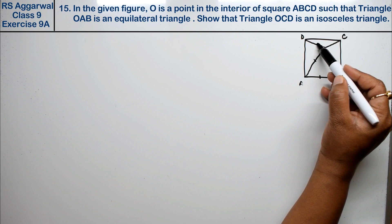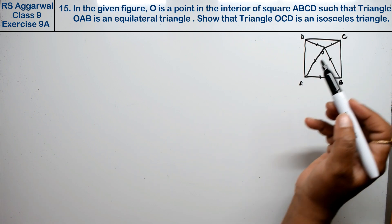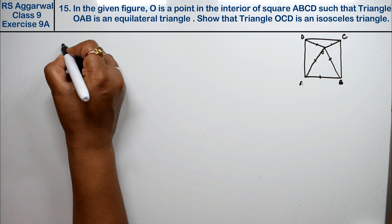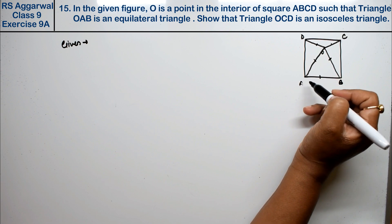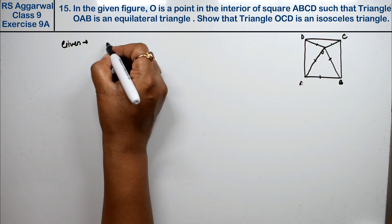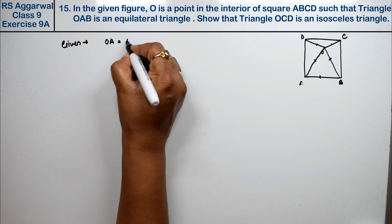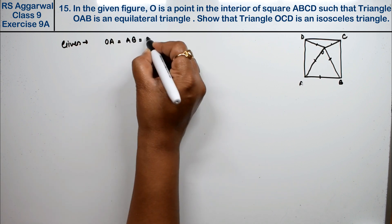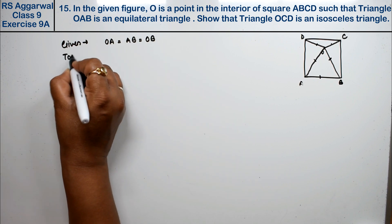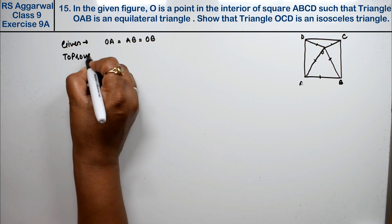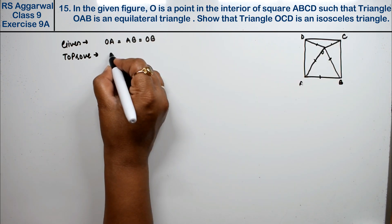Isosceles triangle means we need to prove that two sides are equal. Given: Triangle OAB is equilateral, which means OA equals AB equals OB.